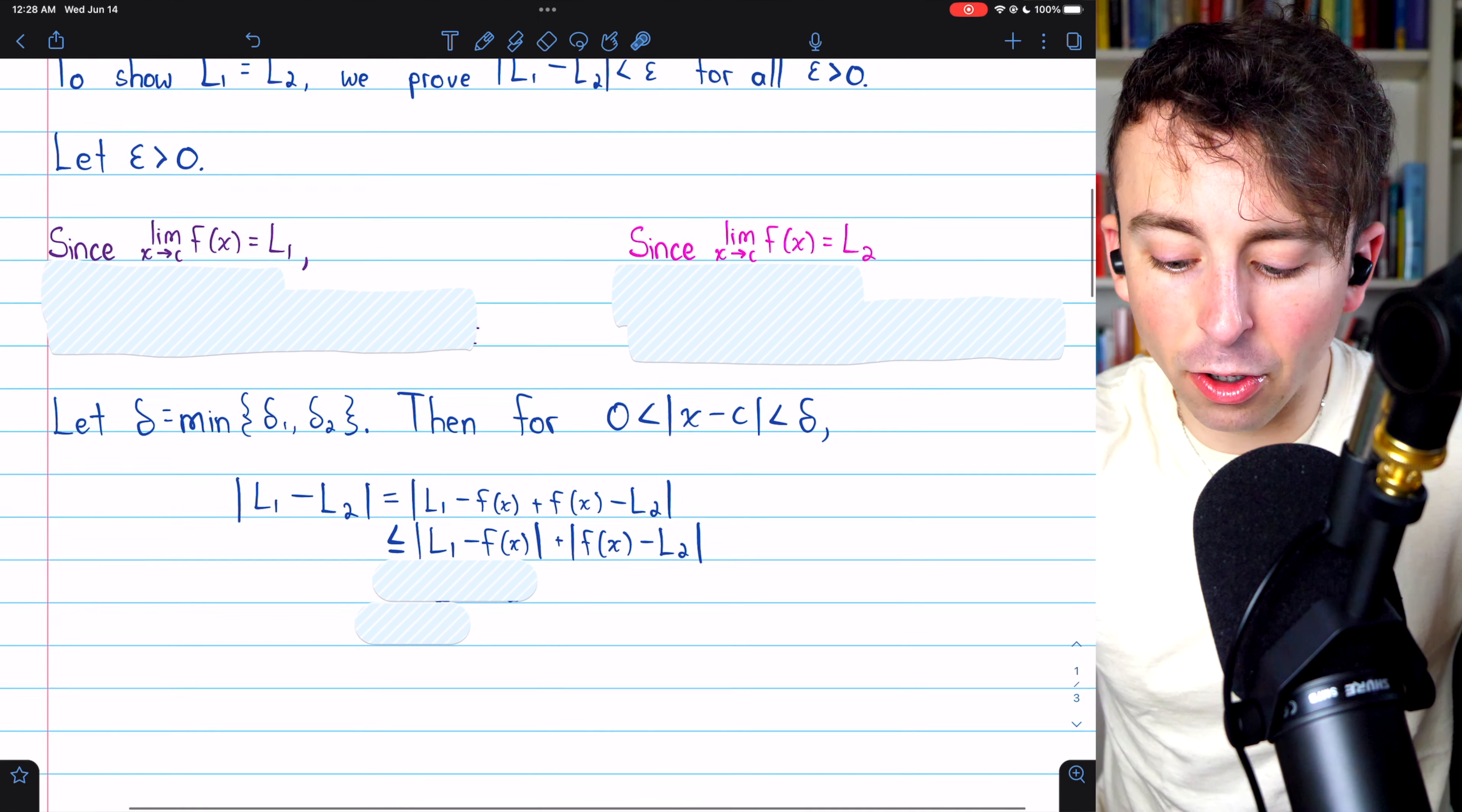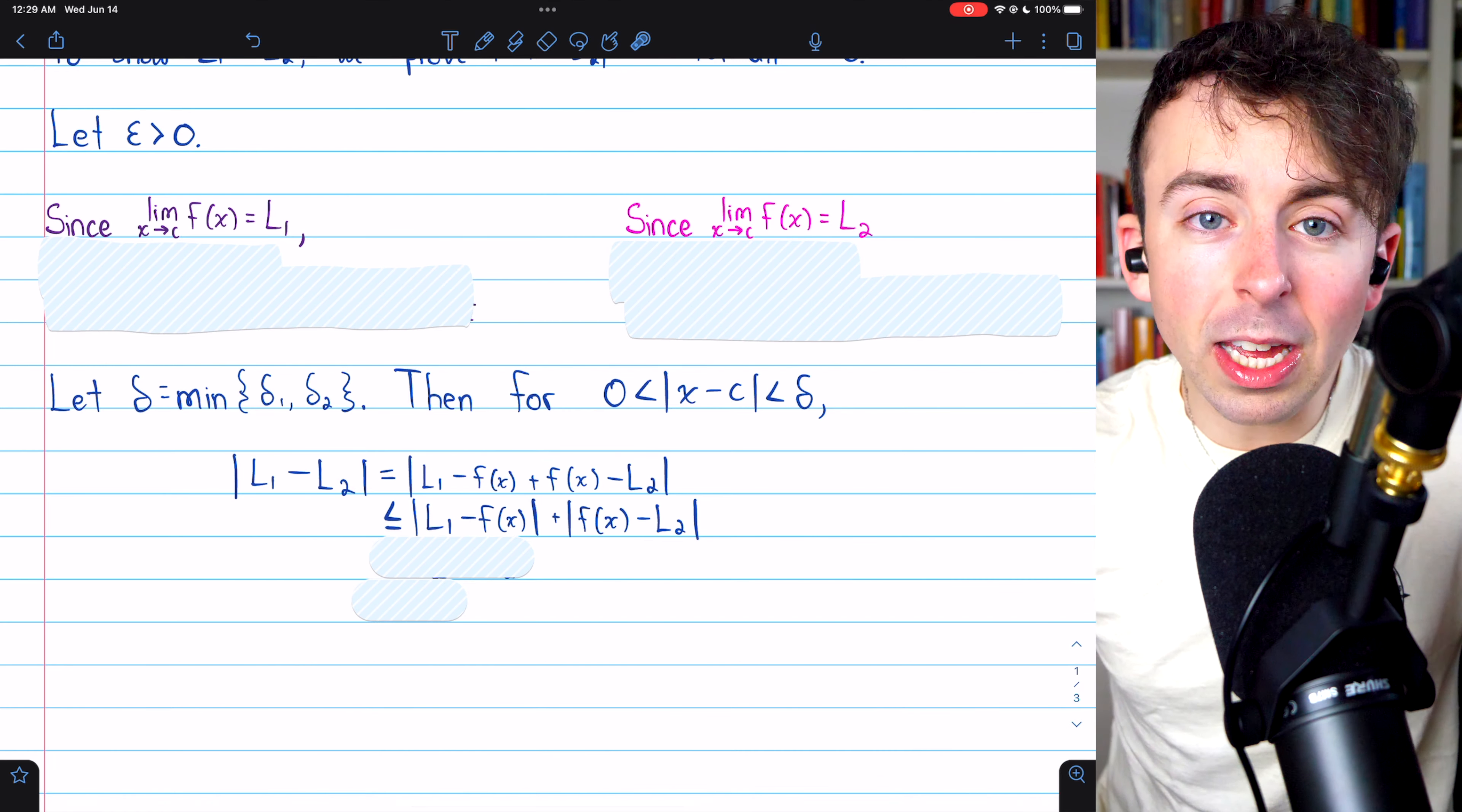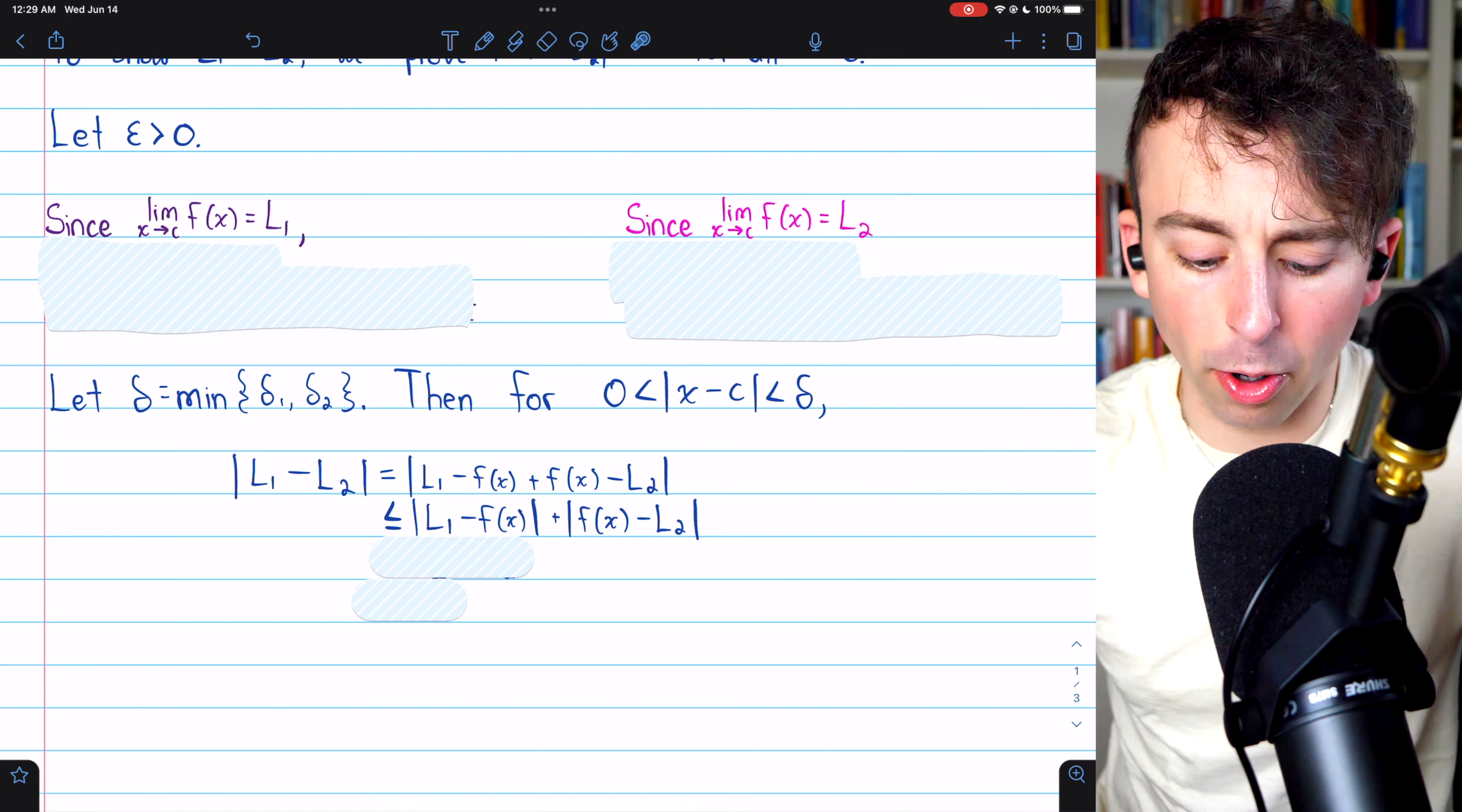Now, I'm just going to skip a little bit ahead in the proof so that we can see where these parts are going to come from, because the idea is that we're trying to make this distance arbitrarily small, the distance between L1 and L2. Now, we can make X as close to C as we want. C is a limit point, so the absolute value of X minus C will be less than delta, and it will be up to us to pick a delta that makes the proof work.